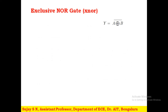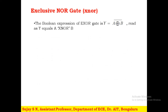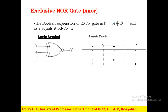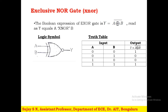Next is the Exclusive NOR gate, represented as Y = (A ⊕ B)‾. It is exactly the reverse of the XOR gate. The logical symbol has a bubble at the output of the XOR gate. In the truth table it gives output 1 when A=0 and B=0, and when A=1 and B=1; in the other two cases the output is 0. It is exactly the reverse of the XOR gate.